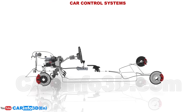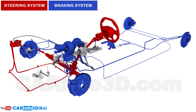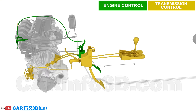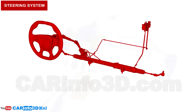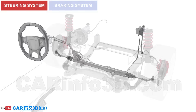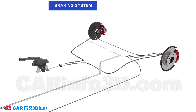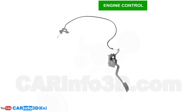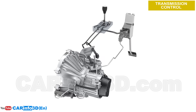Next, car control systems — they include the steering system and the braking system. It would also be appropriate to review engine and transmission controls here. The steering system is required to change the direction of the car's movement. The braking system is required to slow down, stop, and keep the car in place. Engine control is used to alter the engine torque; this is an older model with a mechanical throttle valve. Transmission control is required to temporarily disconnect the engine and the transmission and select the desired gear or gearbox mode.